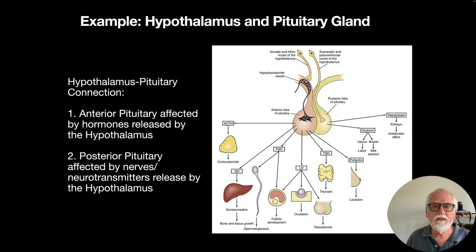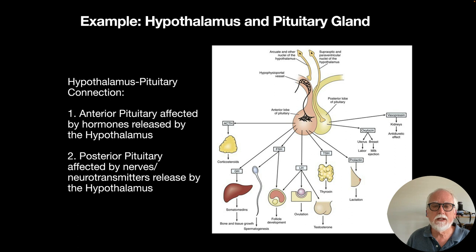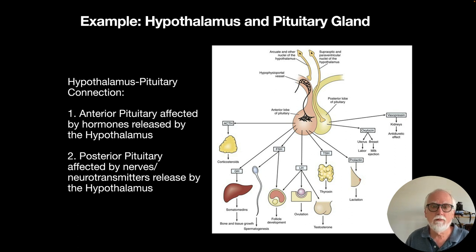Nerves come down from the hypothalamus and release neurotransmitters at the cells of the posterior lobe of the pituitary. Depending on the messages from the hypothalamus, the anterior and posterior lobes release different hormones — and they won't release them all at once, only what the message from the hypothalamus indicates needs to be released.